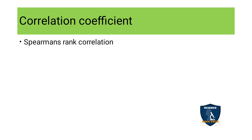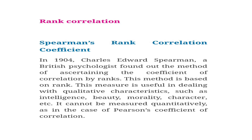Under Spearman's rank correlation coefficient there are three types. First, when ranks are given directly, you can substitute in the formula and calculate directly. Second, when marks are given instead of ranks, you have to identify the ranks first. Within that case, there are two sub-types: when marks are repeated, you handle it differently, and when marks are not repeated, you find ranks and proceed. In this video, we will only discuss the case where ranks are given directly.